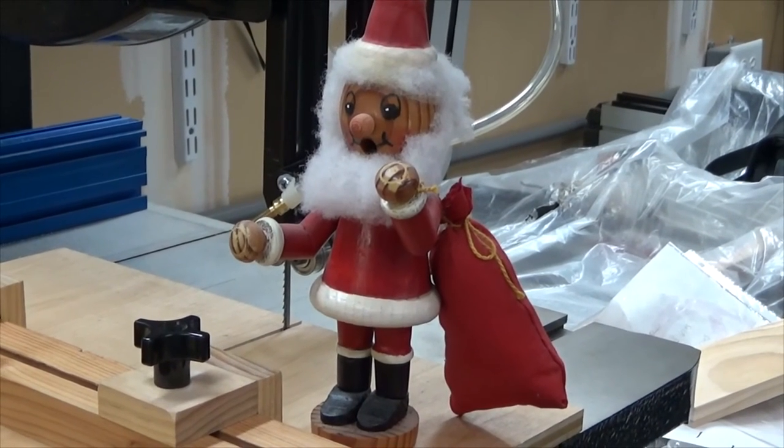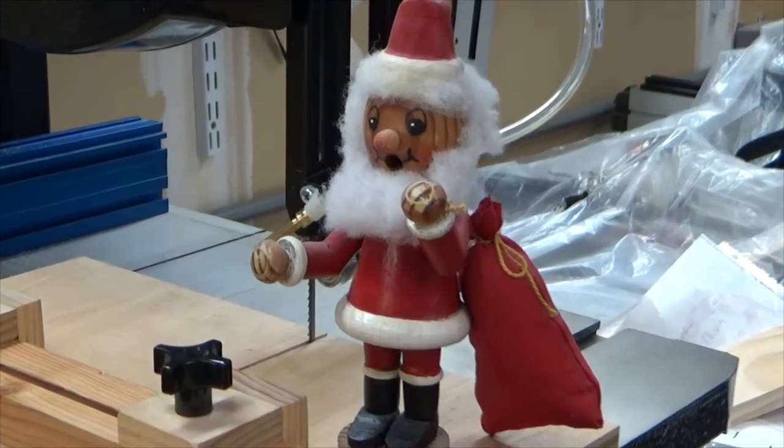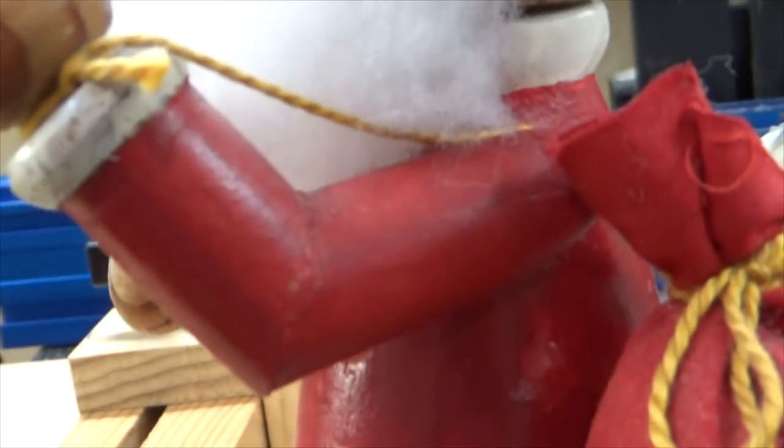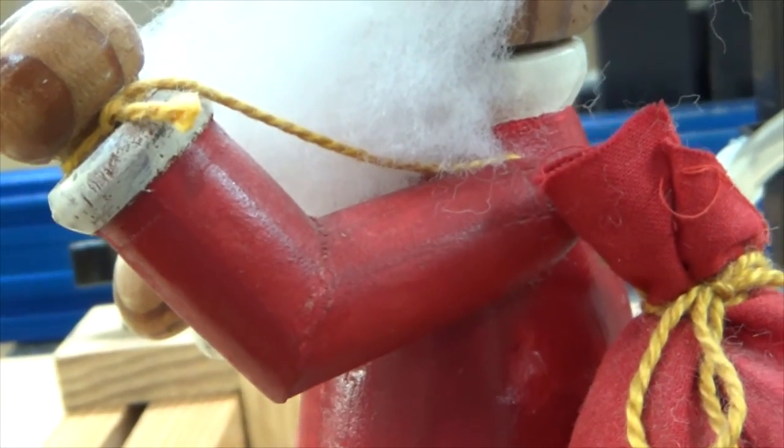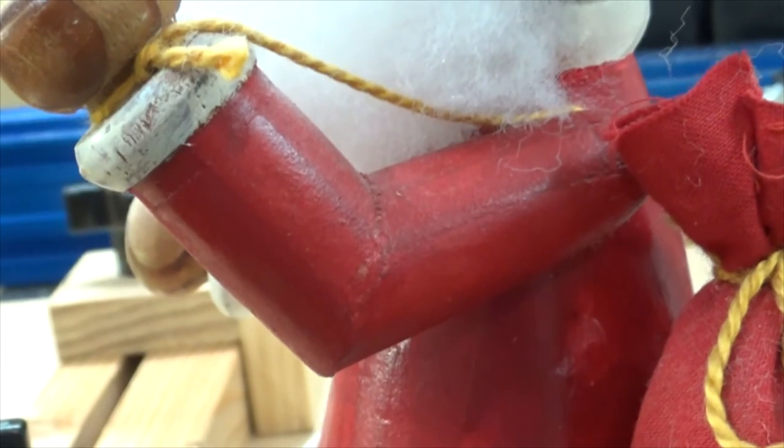One of the main things I make are German smoking men. Most of the parts are made on the lathe. If you notice, on the arms I need to get angles. These were cut using the bandsaw sled. I'll demonstrate how.